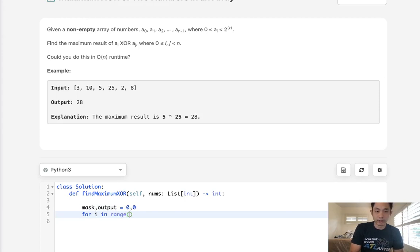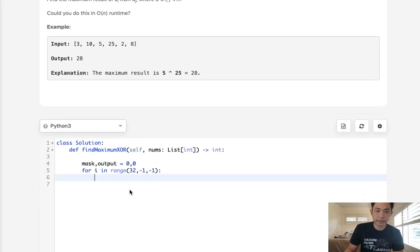So for i in range of 32 bits, we're going to go in reverse and build up our mask and output and check to see between all of our numbers can we find this. All right, so first let's create our mask.